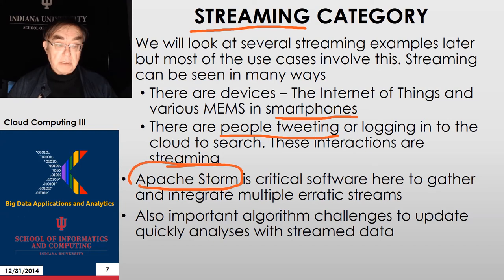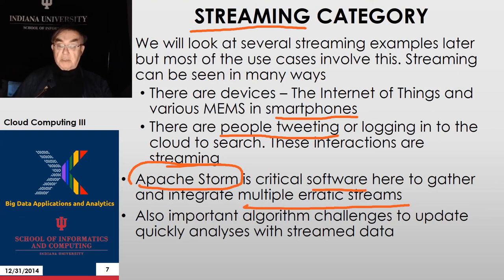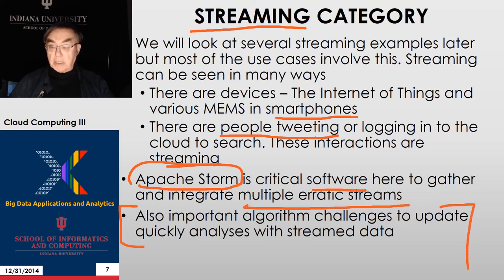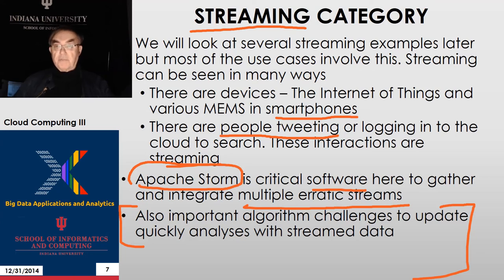Apache Storm is critical software for this type of application. It allows you to gather and integrate multiple erratic, not specially synchronized streams, and there's lots of fascinating computer science to do the algorithms to analyze this data. So that's a very quick overview of how science and technical computing can be done on the cloud. Thank you very much. This is Jeffrey Fox signing out.